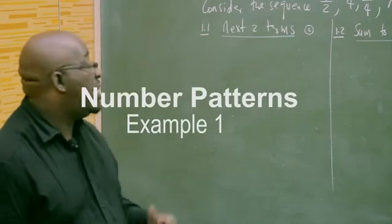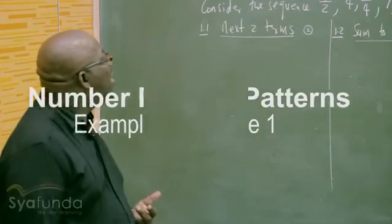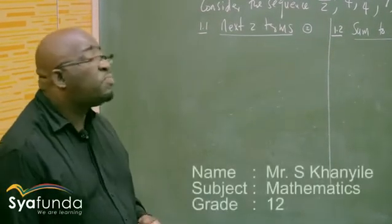I want us to look at how we have this number pattern in our examinations. Remember, there are only three types of patterns. It's either the arithmetic sequence — how do we identify the arithmetic sequence by a common difference — or it can be the geometric sequence which has the common ratio. And number three, it can be the quadratic sequence which has the second common difference.